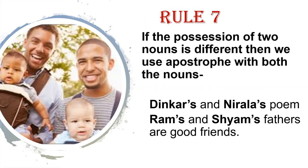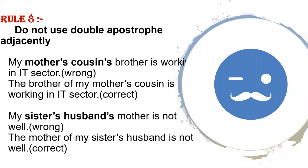Next rule: If the positions are different for two nouns, then we use apostrophe S with both. For example, 'Ram's and Sham's are good friends' — here both are different, so we put apostrophe S with both. Rule number 8: Never use double apostrophe. If you see two apostrophes in a sentence, you can spot the error easily. The correct form would be: 'The brother of my mother's cousin is working in the IT sector.'